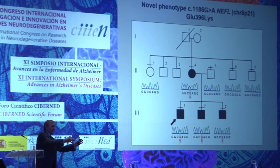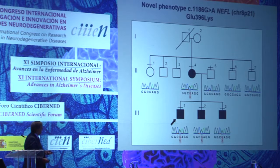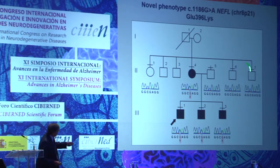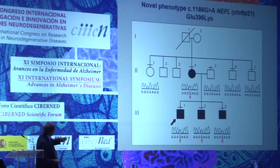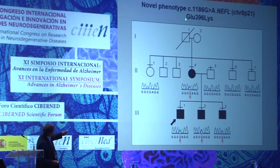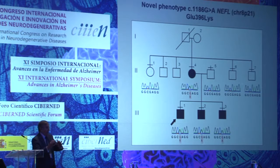I will focus on the family we have studied in the last two decades. This pedigree comprises four affected individuals: the proband 3-1, two brothers, and his mother. We also examined four members of the second generation. We include here the electropherograms showing a change G to A at position 1186, giving rise to the mutation glutamic acid 396 to lysine. I will explain the genetic strategy in this family later.